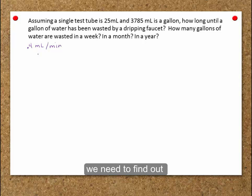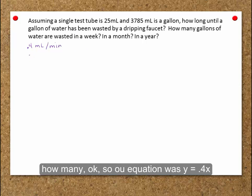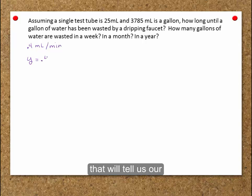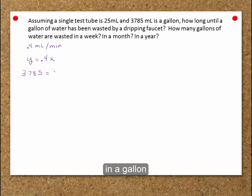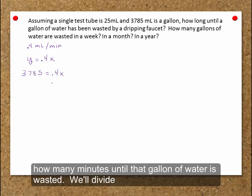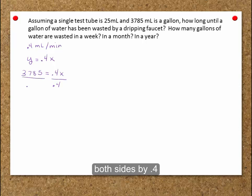We need to find out how many... So our equation was y is equal to 0.4x. That will tell us our minutes. We want to find out how long before there are 3,785 milliliters in a gallon. So how many minutes until that gallon of water is wasted? We'll divide both sides by 0.4.